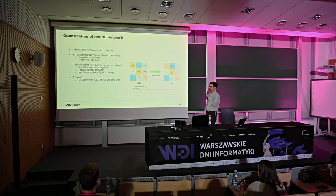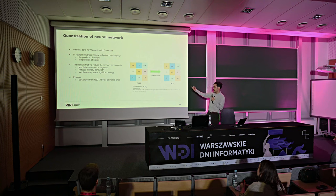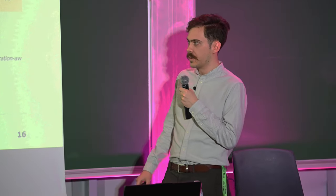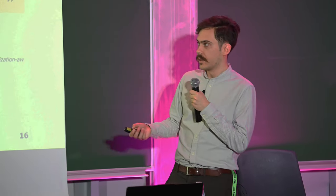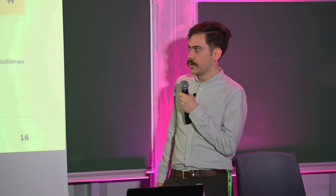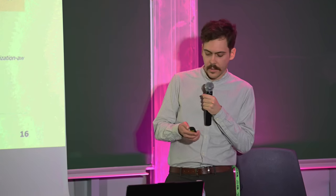Quantization of neural networks is the umbrella term for approximation methods. In neural networks, it mainly boils down to changing the precision of weights and biases — from float32 to int8, cutting from 32 bits to 8 bits. The result is reduced memory access costs, less data to move in registers, reduced memory bandwidth, and a significant amount of energy savings.